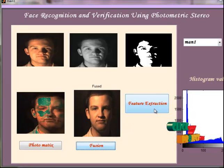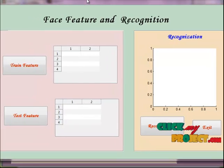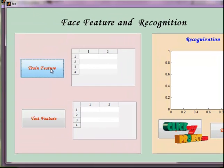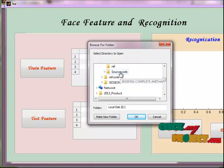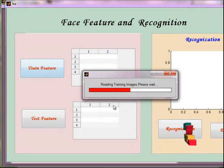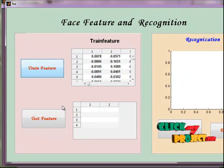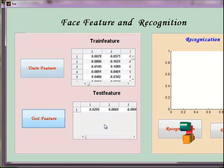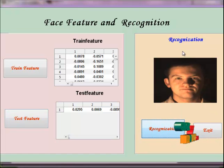Here we select feature extraction. First of all, select the train features, then load the training images, then select the test features, and finally recognize the image. These persons are recognized using that process.